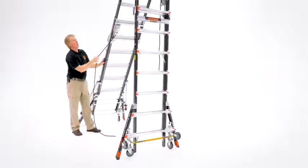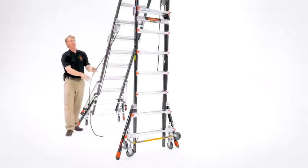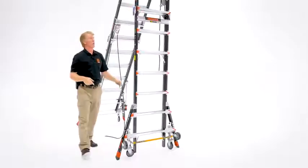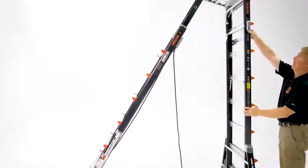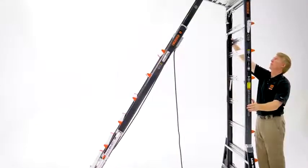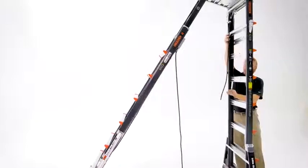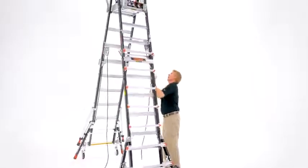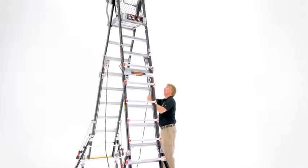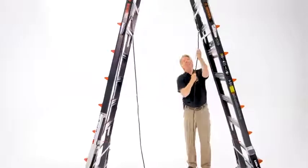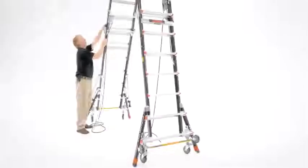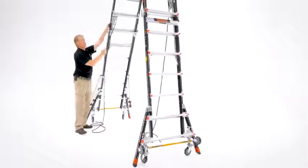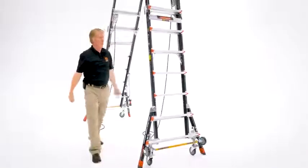And then get it to that next position. Return to the other side. Unlock your rock locks. And then raise that up using the rope. Again, you can go two rungs up and then past that a little bit. And then lock that in place. And again, back to the other side.